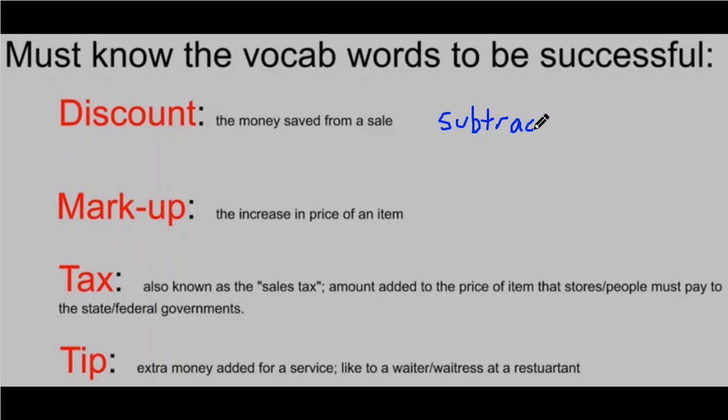Markup is the increase in price of an item. If you think of a company — like if you're going to buy a shirt at Target and they sell that shirt for $20, it doesn't cost that company $20 to make that shirt because they wouldn't make any money. It might cost them $5 and they sell it for $20. The difference between those two prices is called the markup, and that is added to the original price.